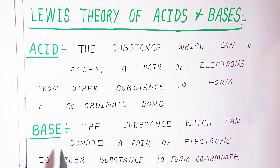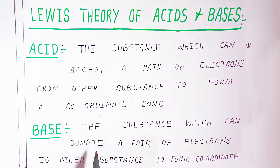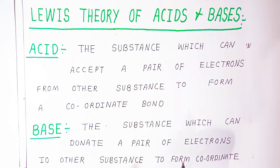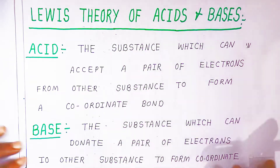What is a base? A substance which can donate a pair of electrons to another substance to form a coordinate bond is called a base. So electron donors — the substances which donate electrons — are called bases.